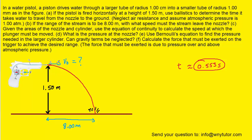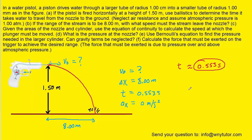Since this is a question about horizontal information, we look at the x direction and make it our goal to find the initial velocity in the x direction. We know the displacement in the x direction is 8 meters, the time is the same 0.553 seconds calculated in part A, and the acceleration in the x direction is 0 meters per second squared because gravity doesn't act horizontally.